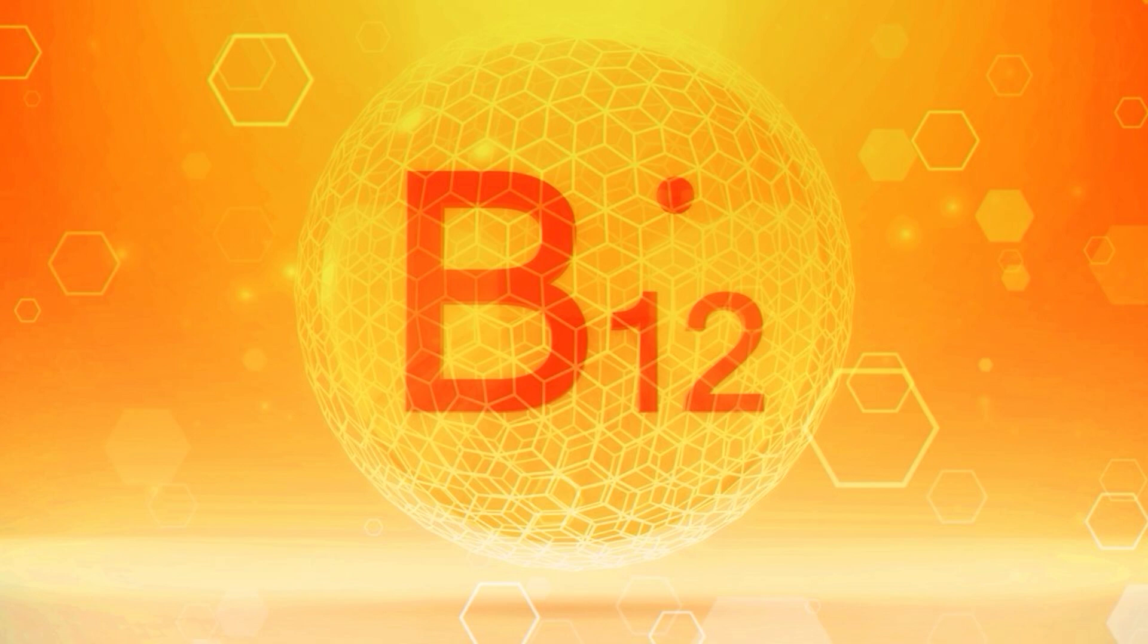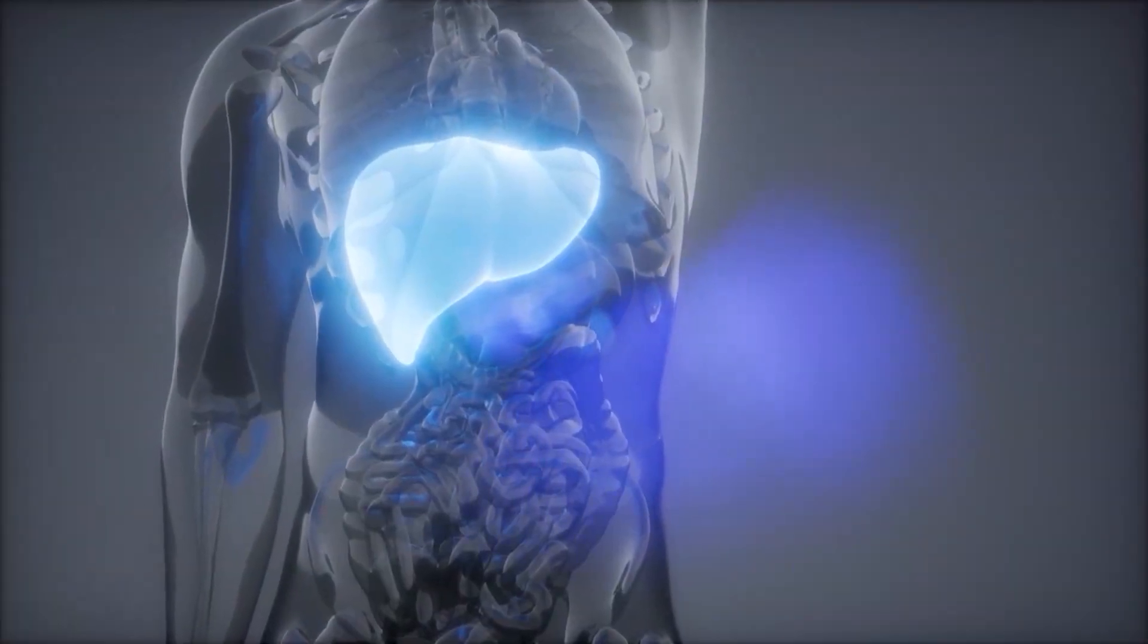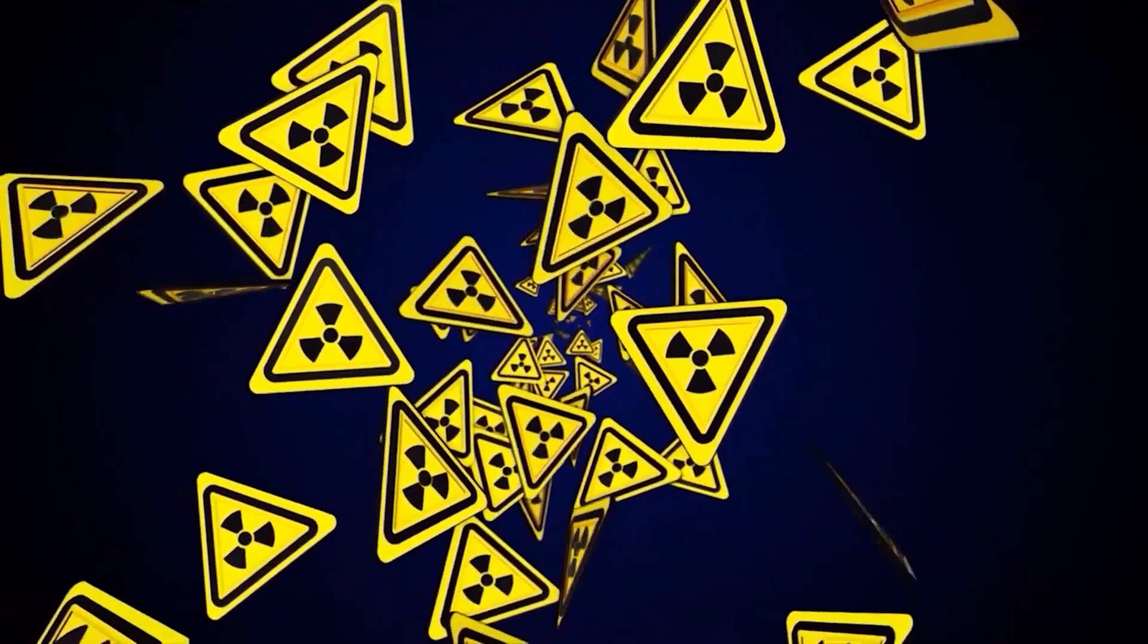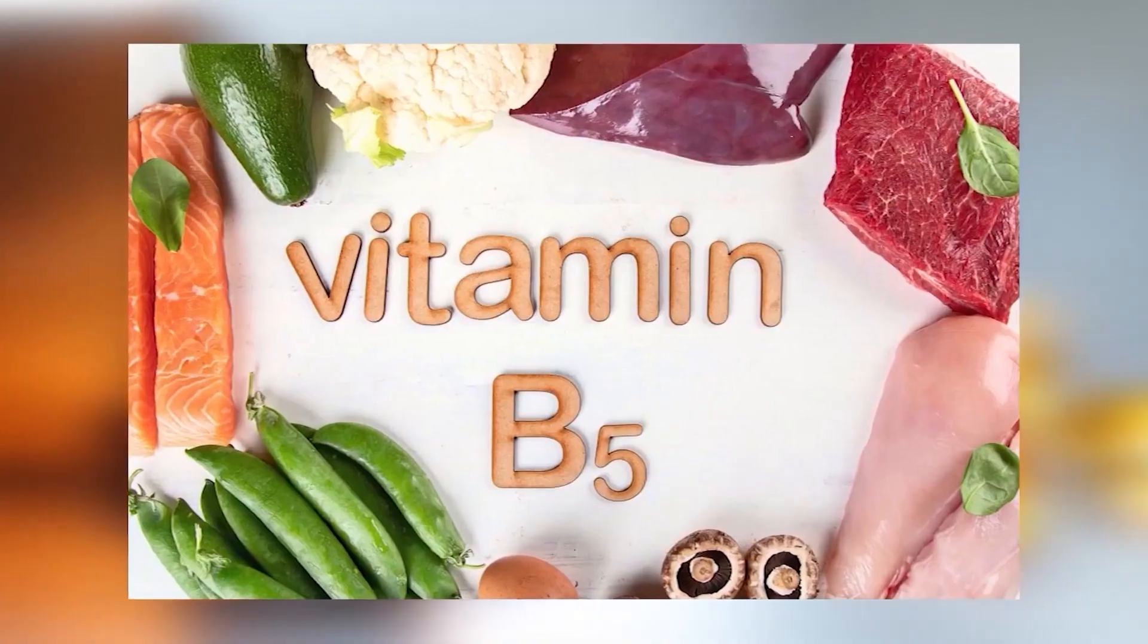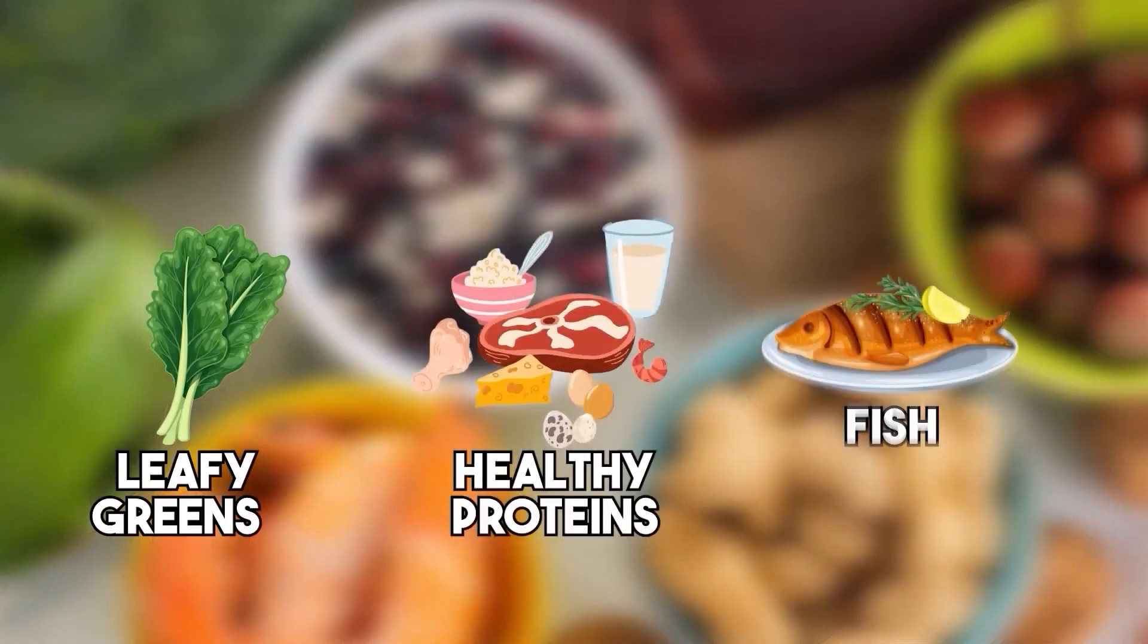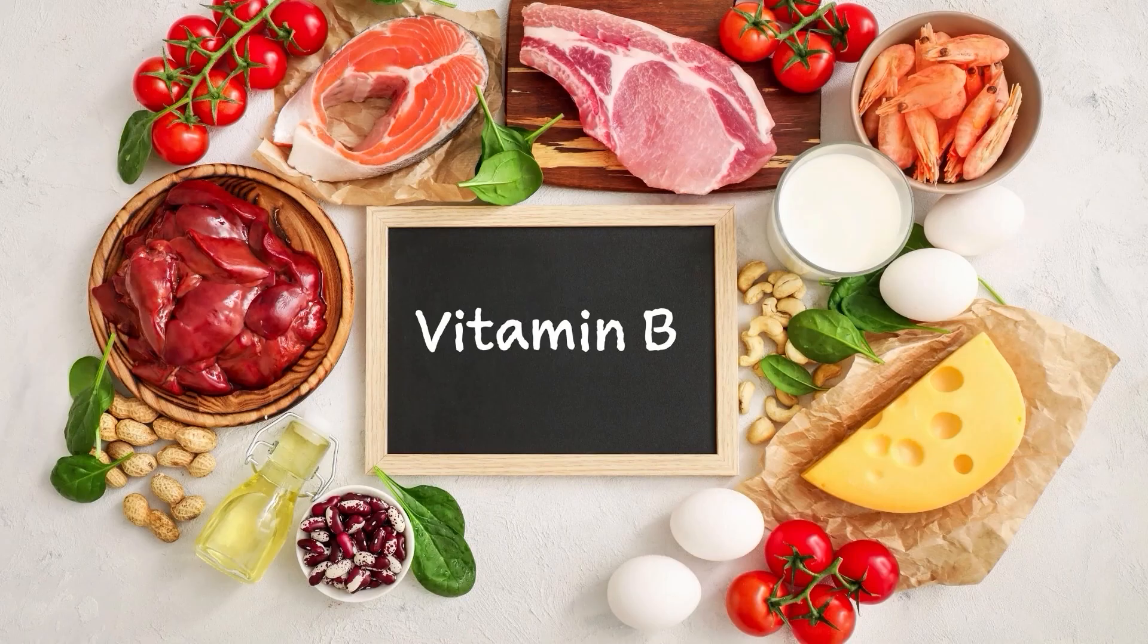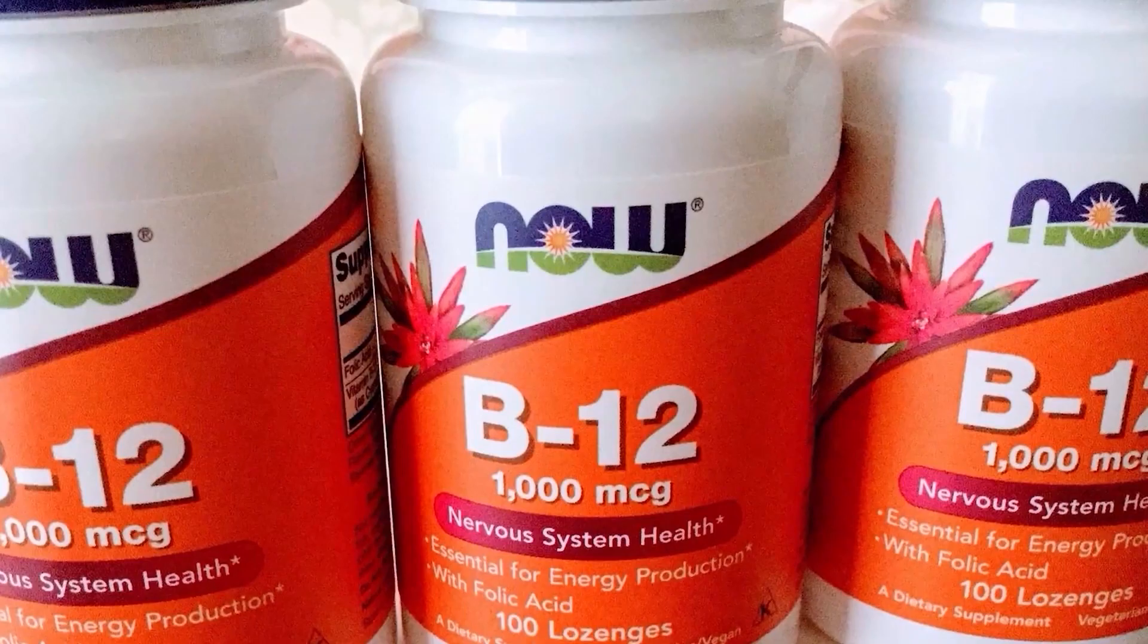And lastly, vitamin B12, cobalamin, is crucial for liver detoxification. It helps break down harmful compounds so your liver can get rid of them effectively. Now here's the thing, you won't find all of these in just one food. But by maintaining a balanced diet rich in leafy greens, lean meats, fish, eggs, nuts, and whole grains, you can easily get a healthy dose of B vitamins. If needed, a vitamin B complex supplement can help fill in the gaps. Just be sure to check with your healthcare provider before starting any new supplement.